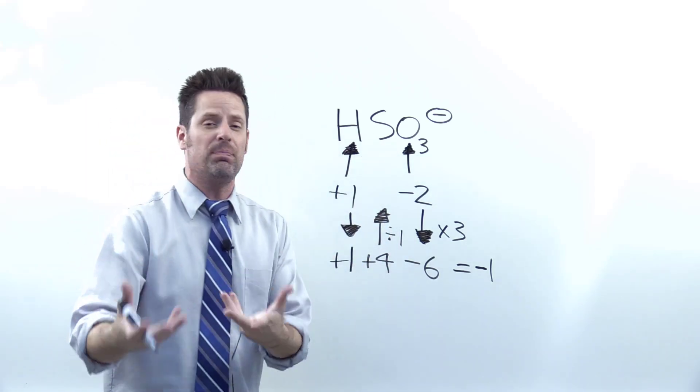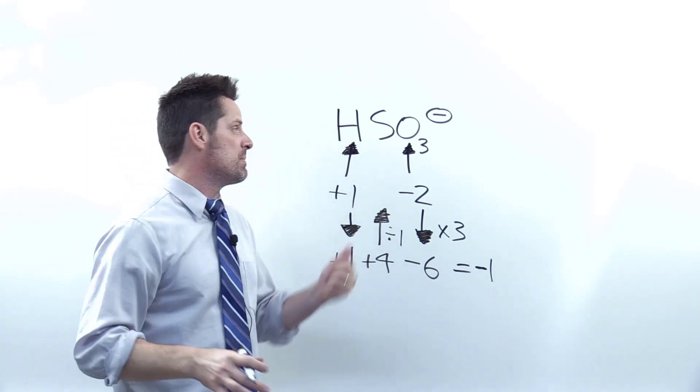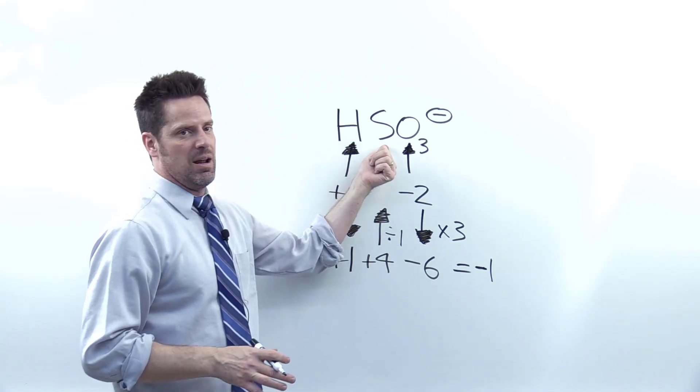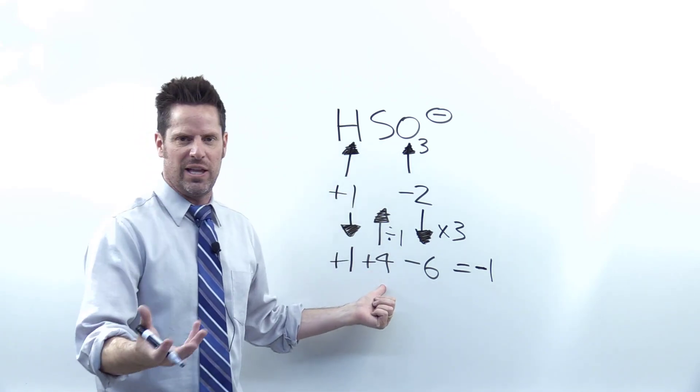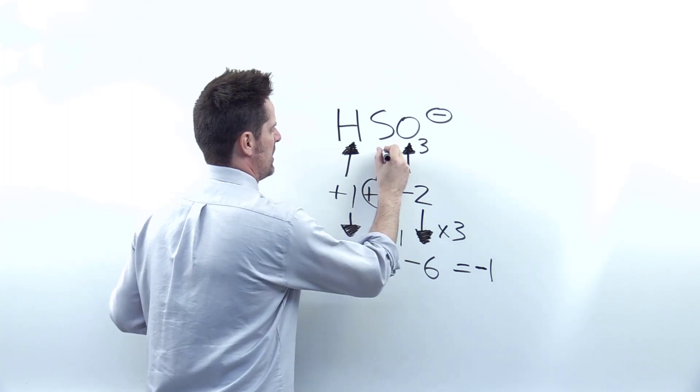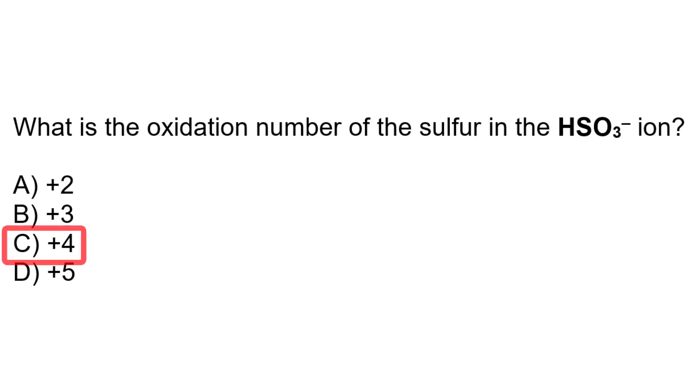But this step is important because sometimes you're calculating out the oxidation number for a formula where you have more than one atom contributing to this overall calculated charge. That gives me a plus four right here as the oxidation number of my sulfur, which lines up with option C.